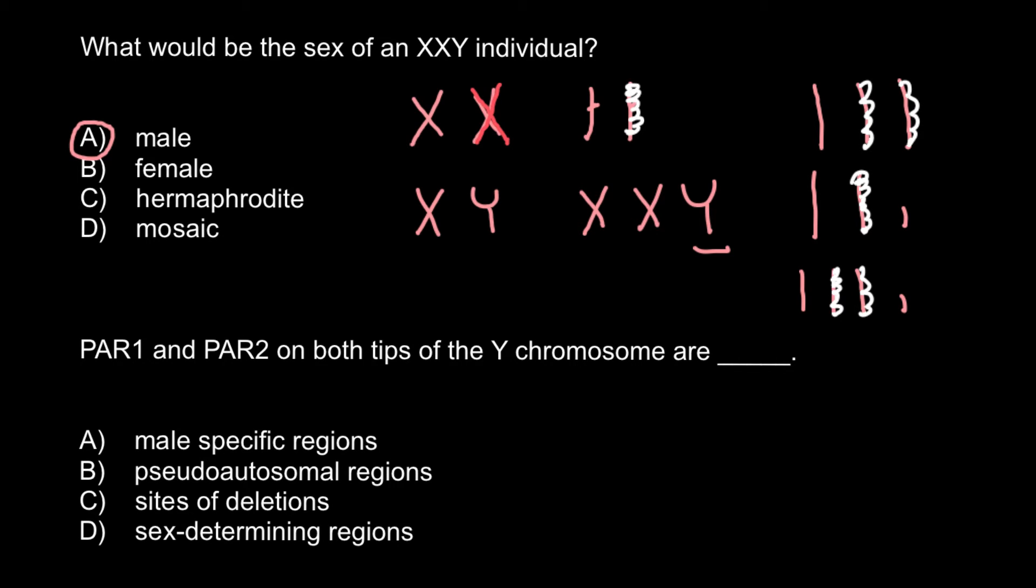So next question. PAR1 and PAR2 on both tips of the Y chromosome are, and once again, here's four answers to choose from. If I would make a karyotype of any person, all the chromosomes in karyotype, as you know, are organized in pairs depending on the size from largest to smallest.